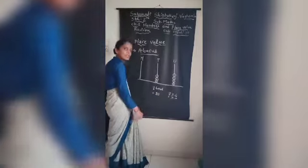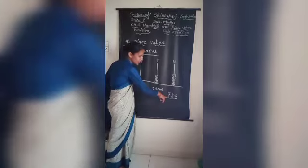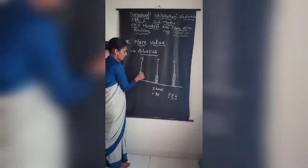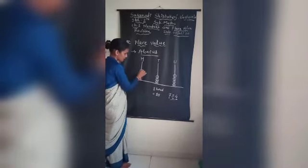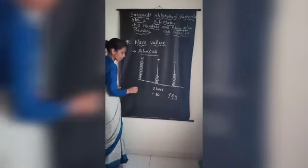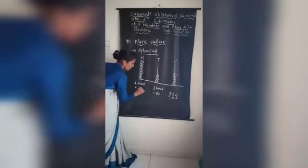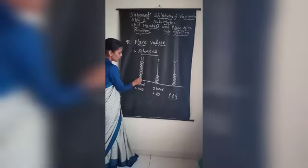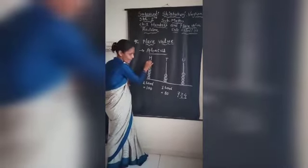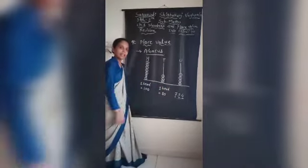Now the digit 7 is in the hundreds place, so it is not just 7 — it is 700. We draw 7 beads, because on the hundreds place, one bead is equal to 100. So: 100, 200, 300, 400, 500, 600, 700. This way we can find the place value of any number.